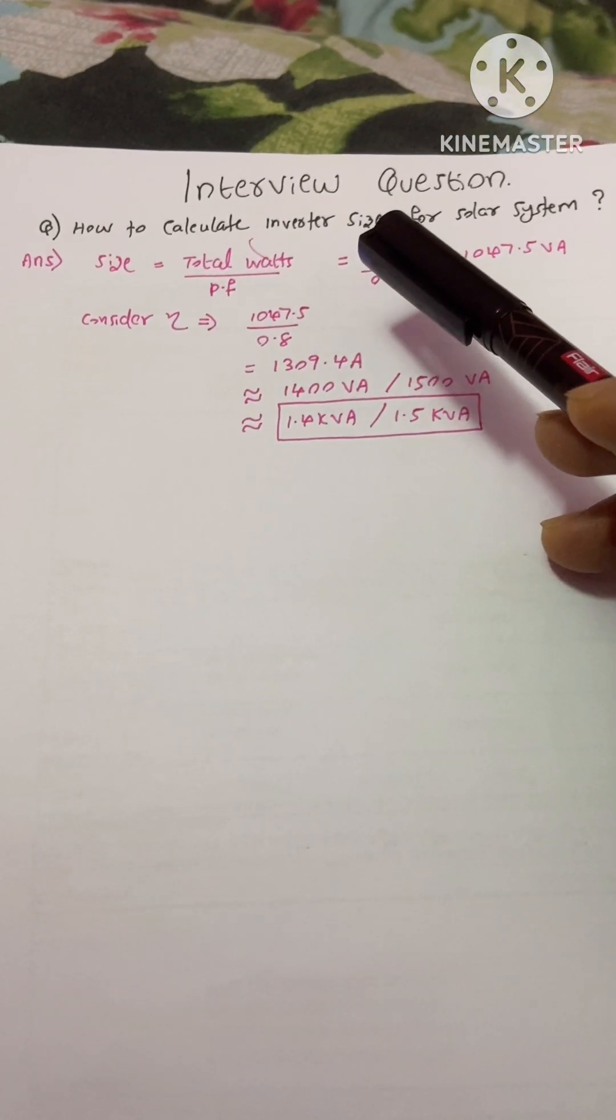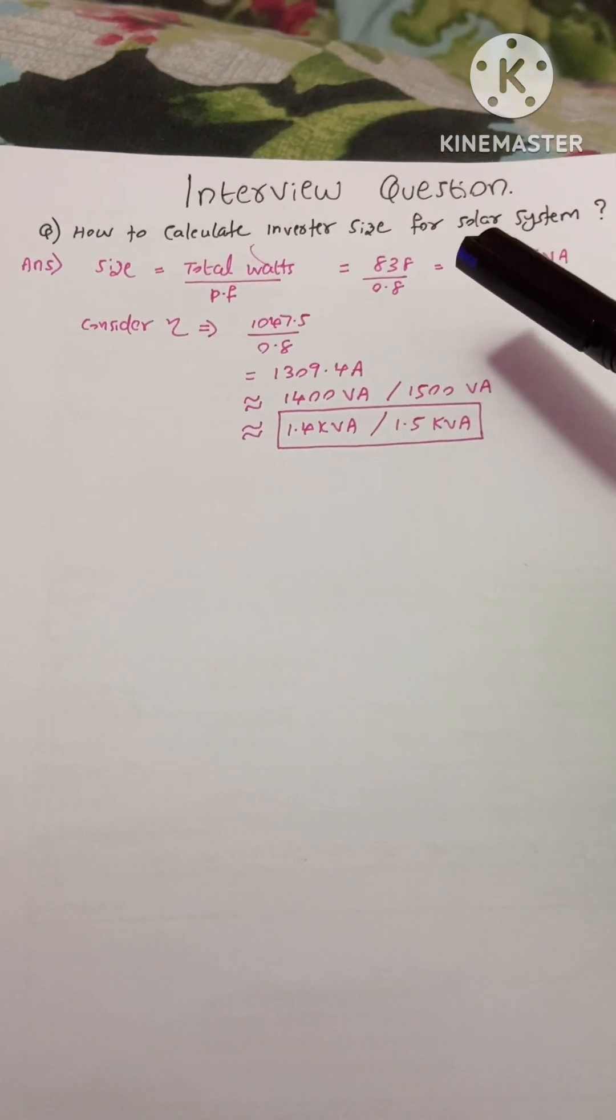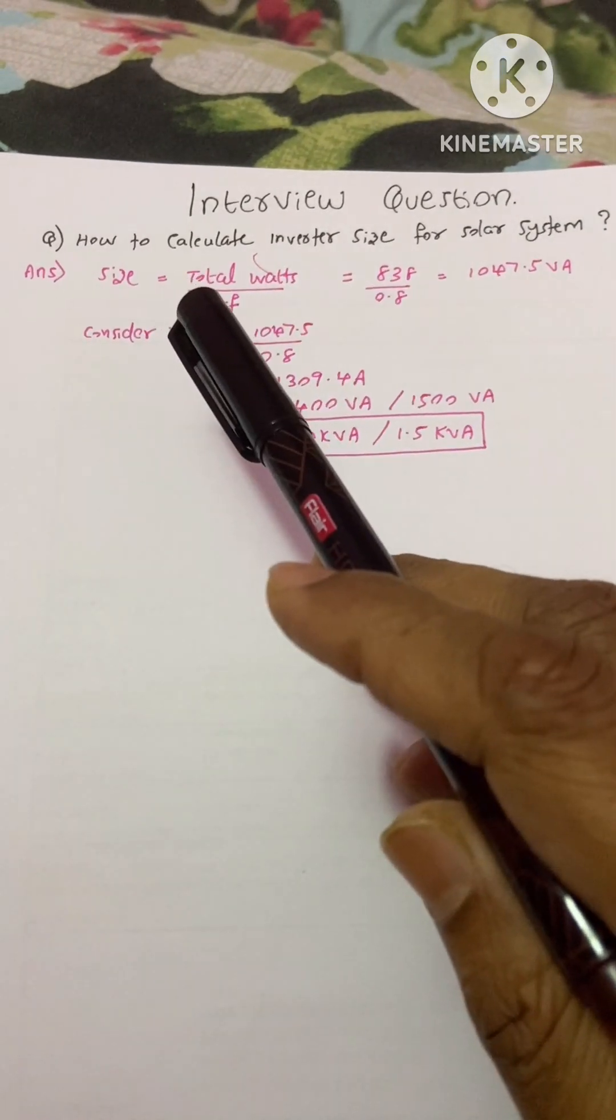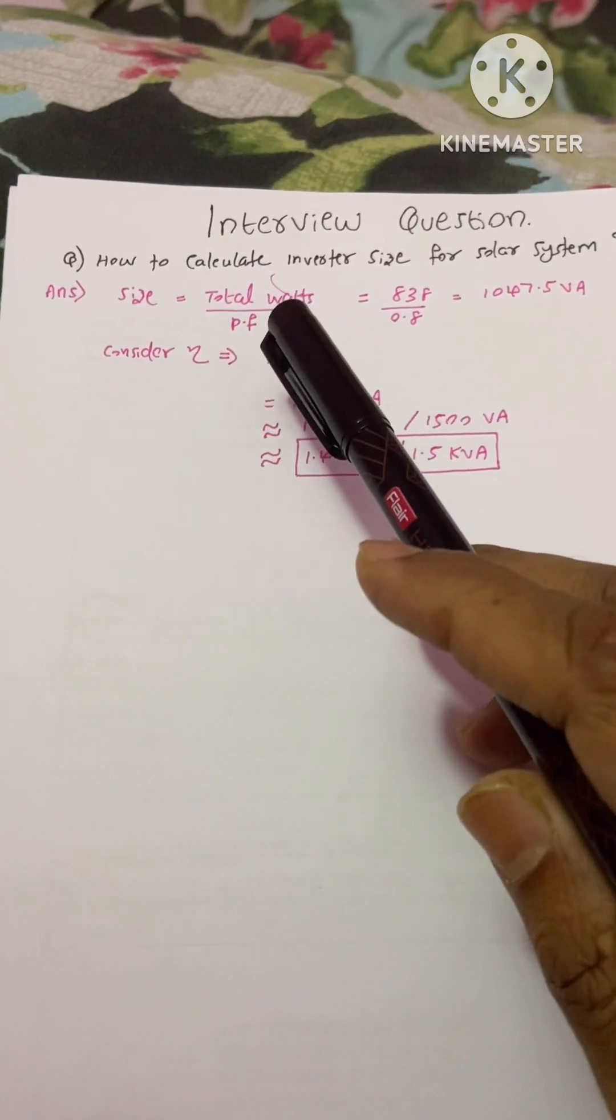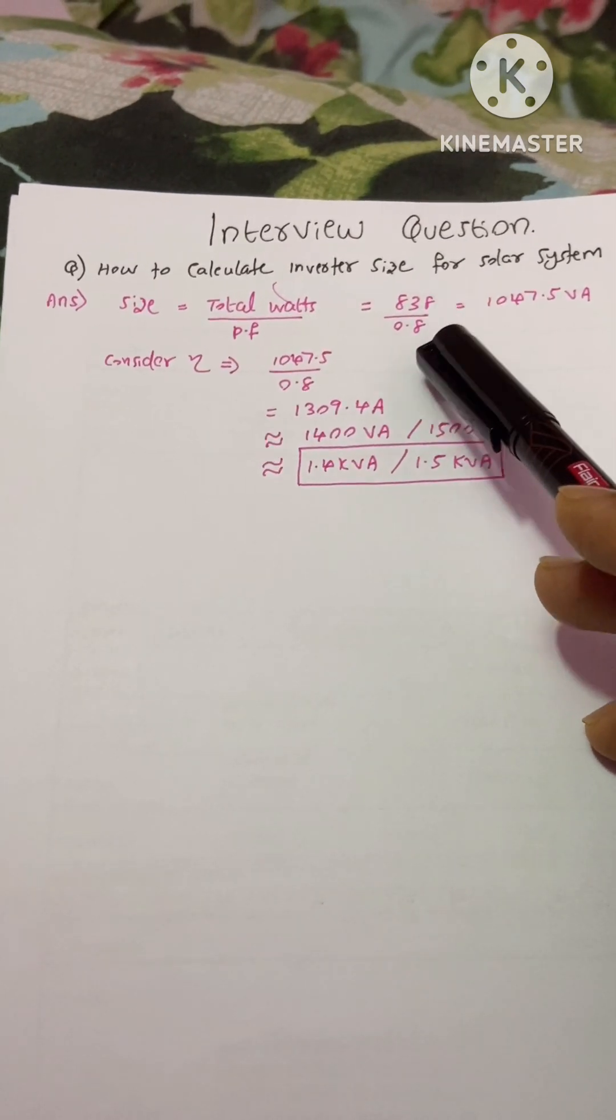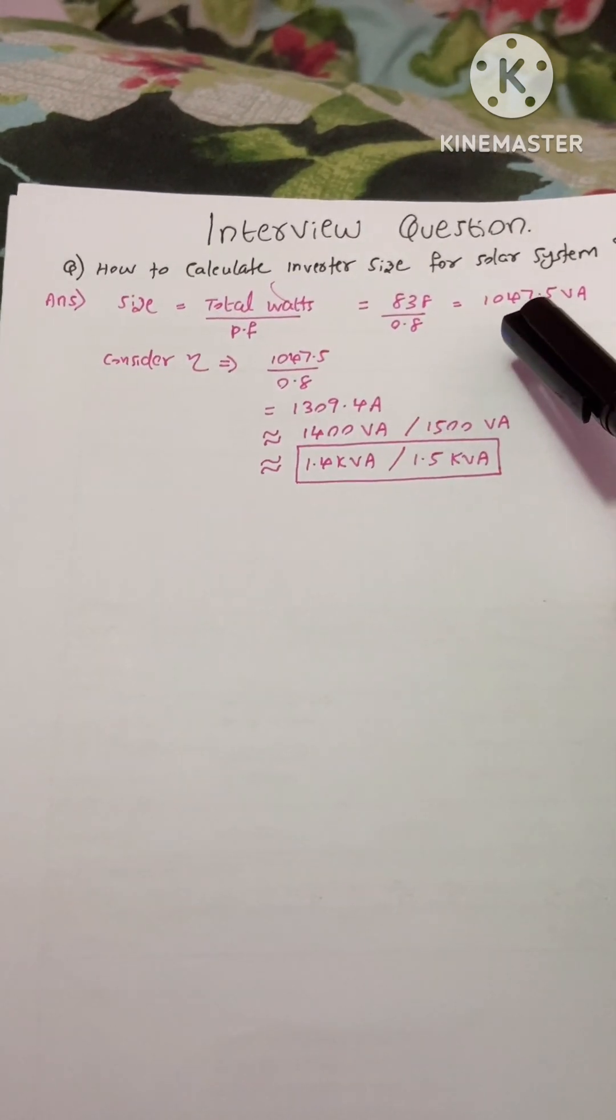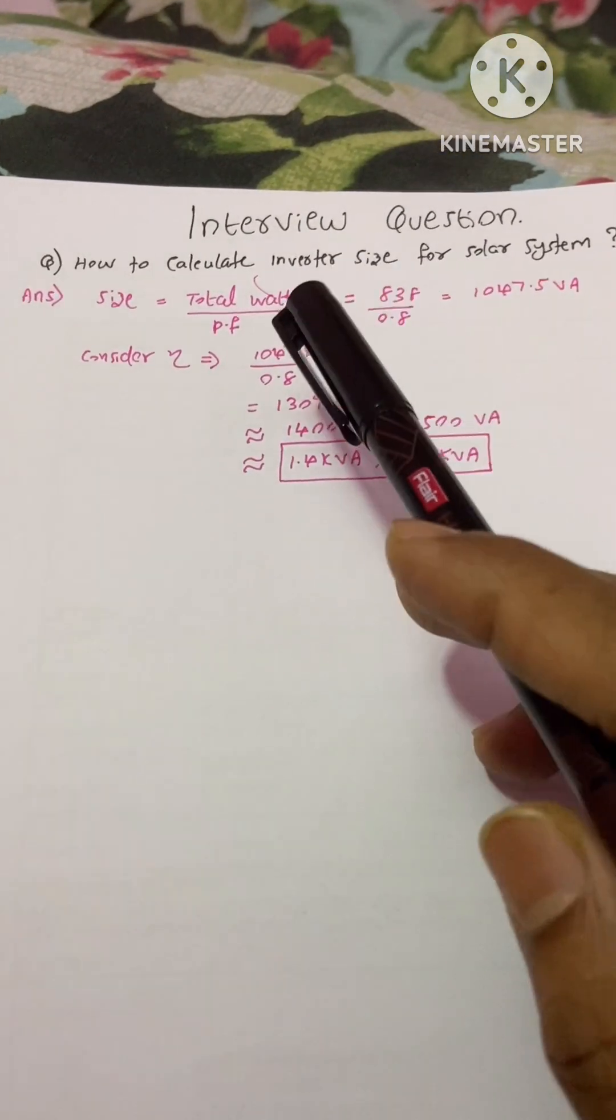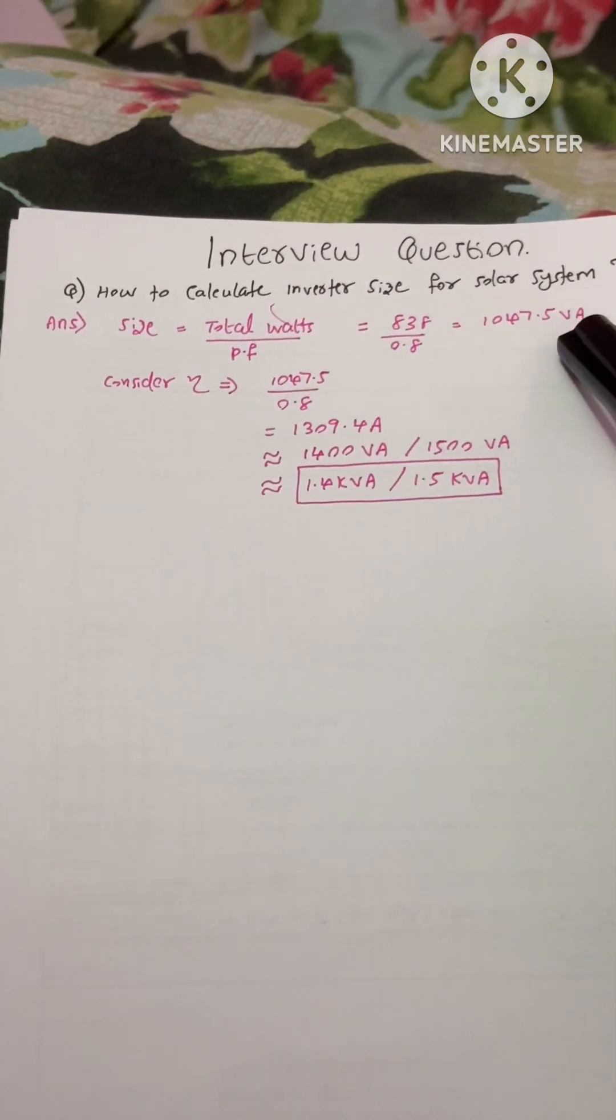Today's interview question: how to calculate inverter size for a solar system. The equation is total watts divided by power factor. Our watts is 838 divided by 0.8, which equals 1047.5 VA. First, we need to convert our watts into VA because our inverter size is always measured in VA.